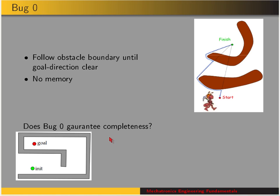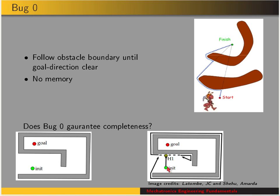Bug zero does not guarantee completeness. The figure shows the path taken by the robot executing the bug zero algorithm: starting off, heading towards the goal, encountering the obstacle, and performing right wall following until the direction to the goal is clear — then going towards the goal again, encountering another obstacle, performing right wall following, and the robot gets stuck in a loop. It's also problematic with left wall following. So bug zero does not guarantee completeness.